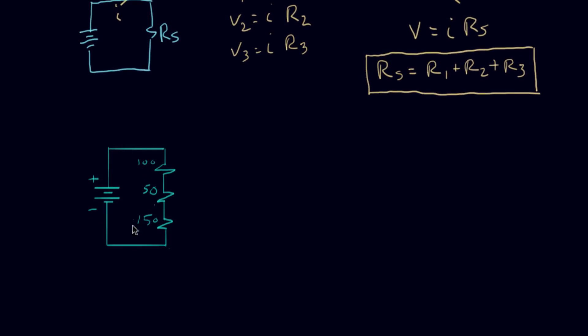Here's an example with three resistors. I have labeled them 100 Ohms, 50 Ohms, and 150 Ohms. And what I wanna know is the current here. And we'll put in a voltage, let's say it's 1.5 volts, just a single small battery.